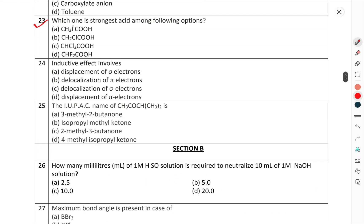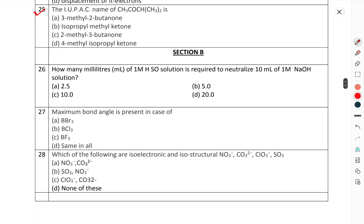Question number 22: Which of the following can't be represented as a resonance structure? Question number 23: Which one is the strongest acid among the following options? Question number 24: Inductive effect involves. Question number 25: The IUPAC name of CH3-CO-CH2 is.